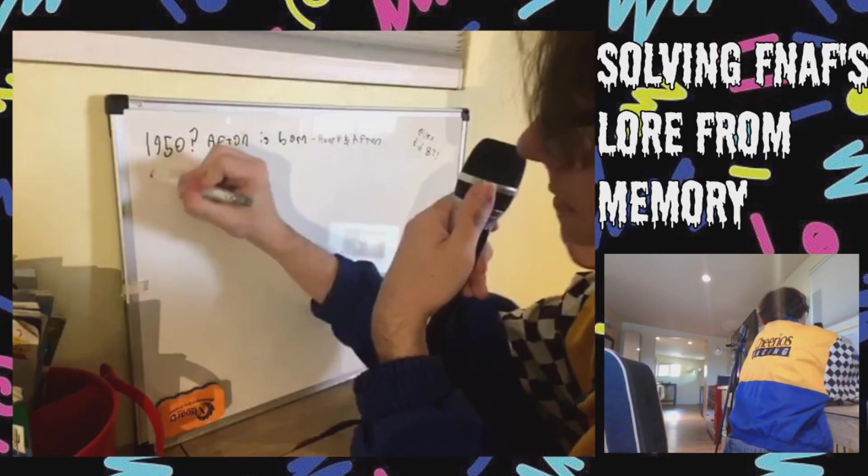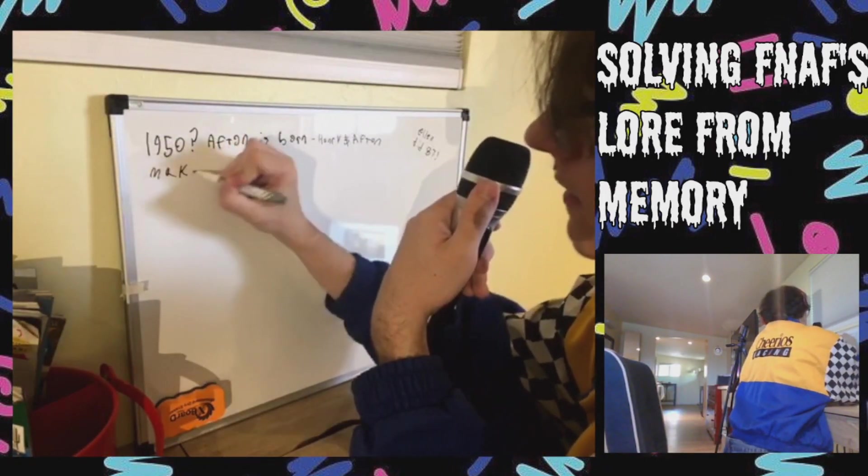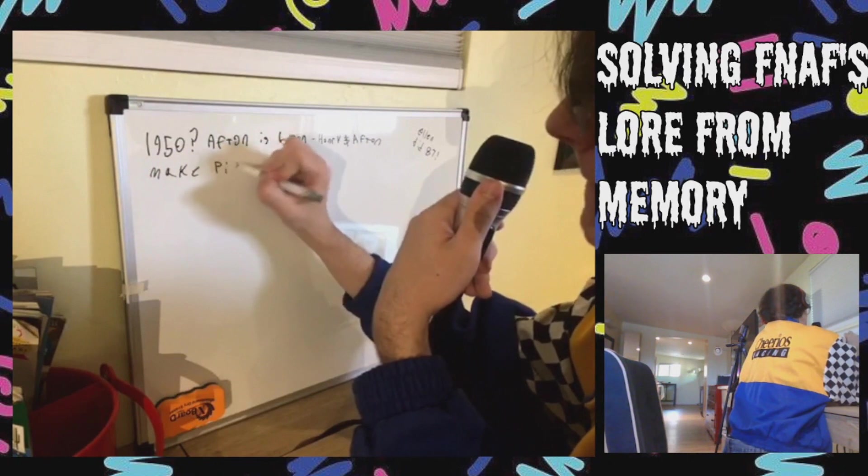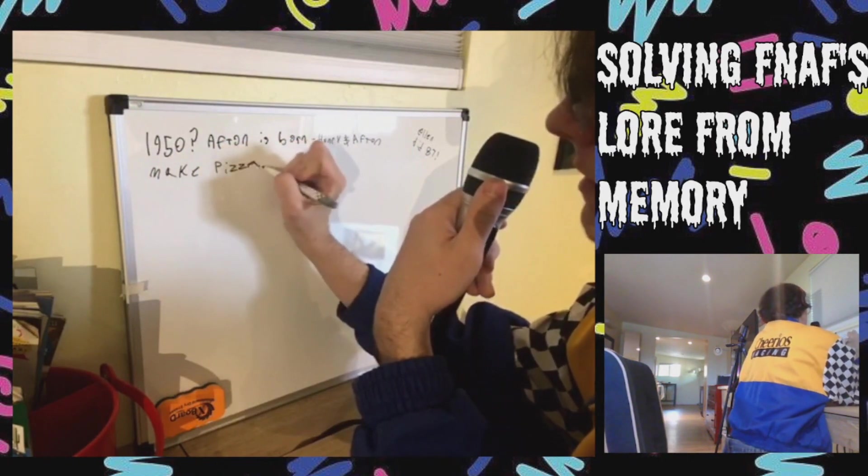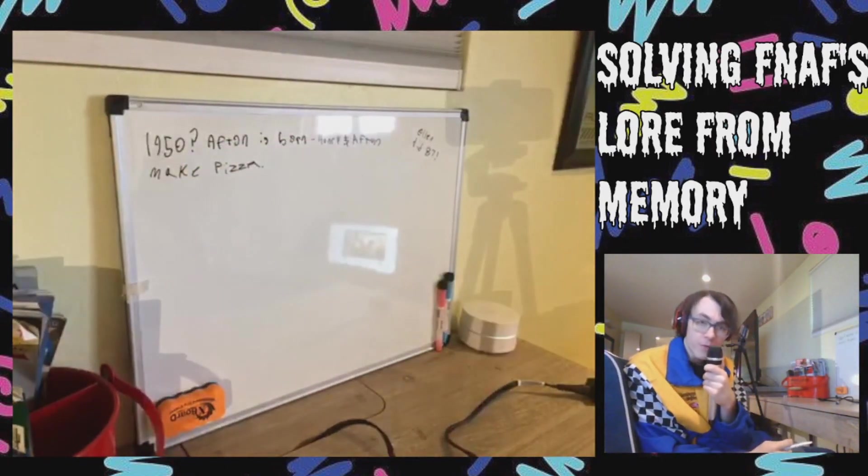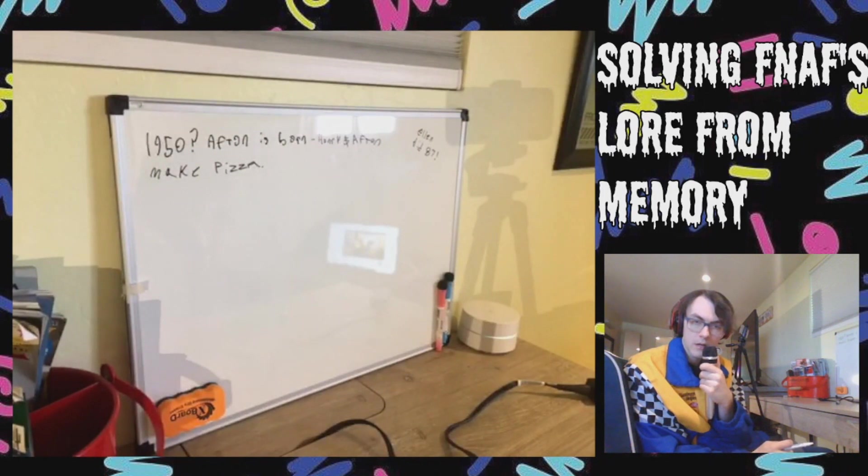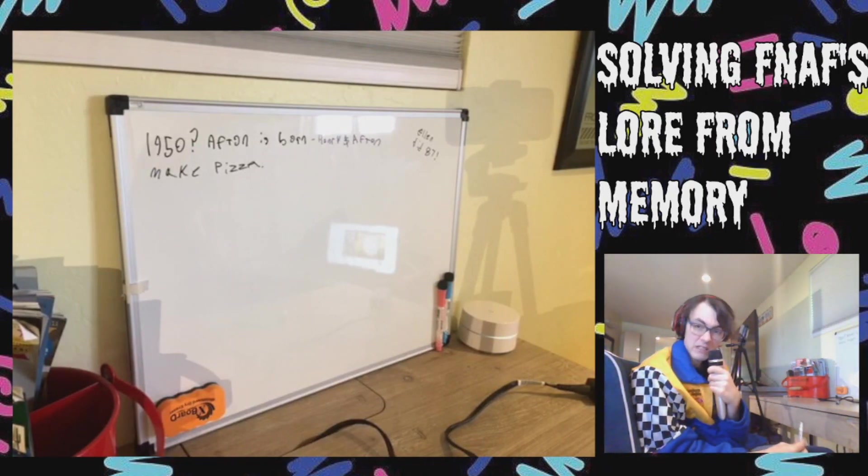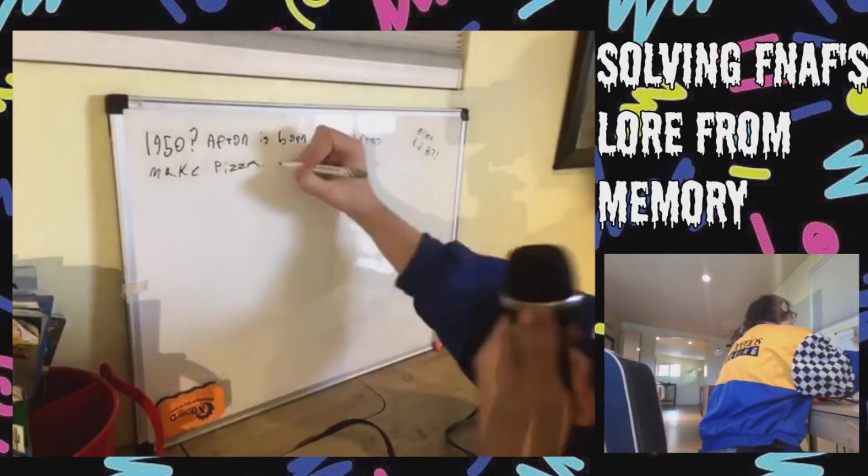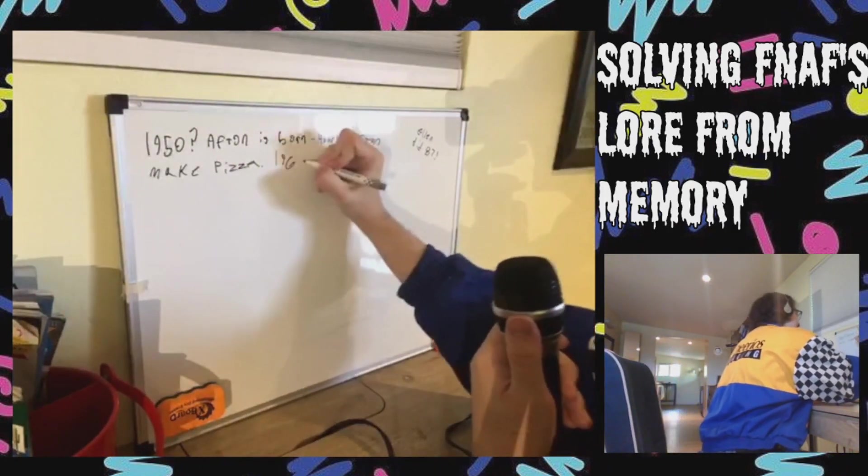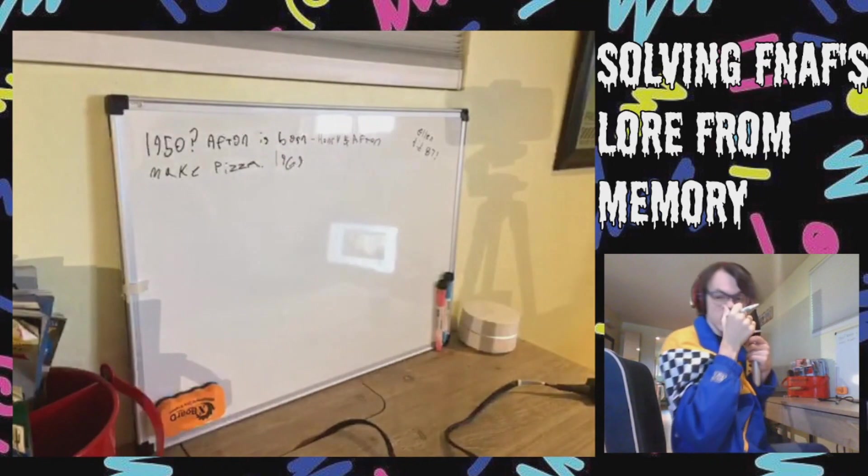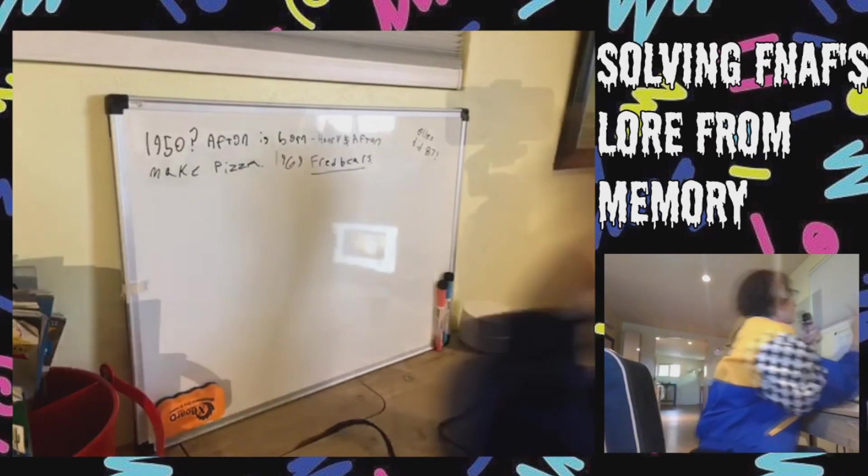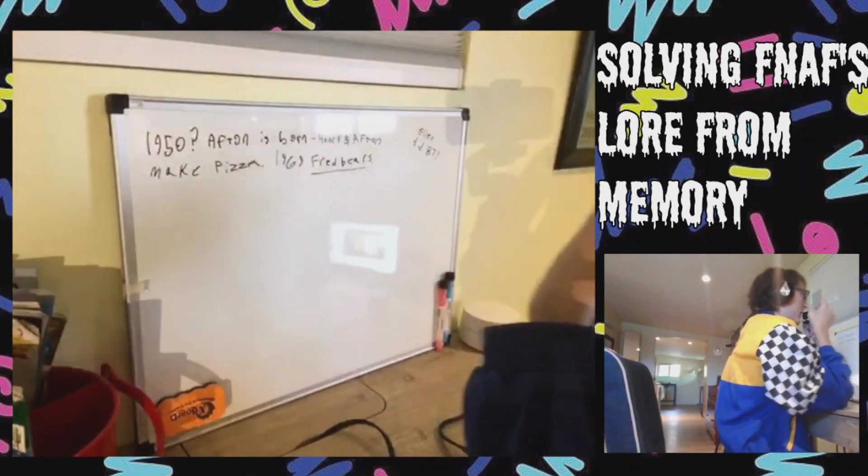Afton was born. William Afton is born. Him and Henry make pizza, right? So when did that, when was the first thing supposed to be? When was the first, is that like the early, late 60s? Is that when FNAF, is that when that was supposed to happen? I guess 1969, just because it's so awesome and funny. So Fred Bears, the first Fred Bears.